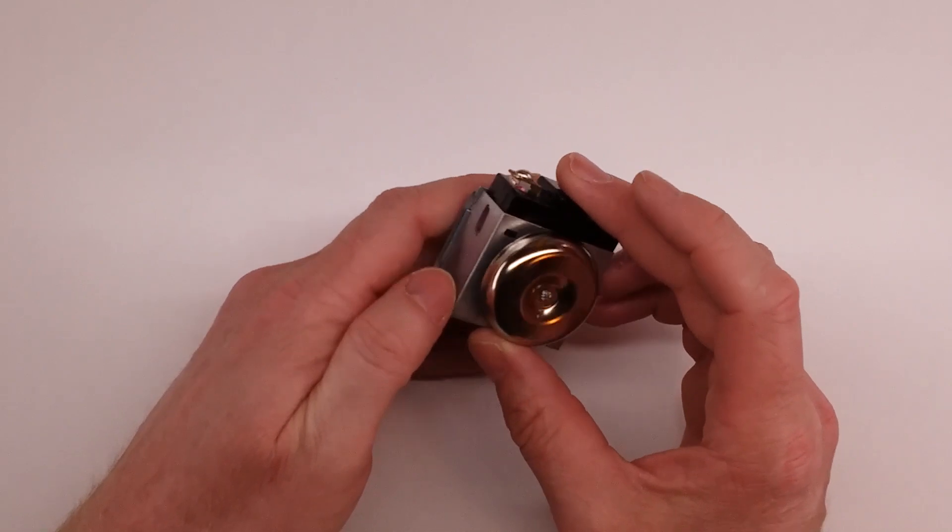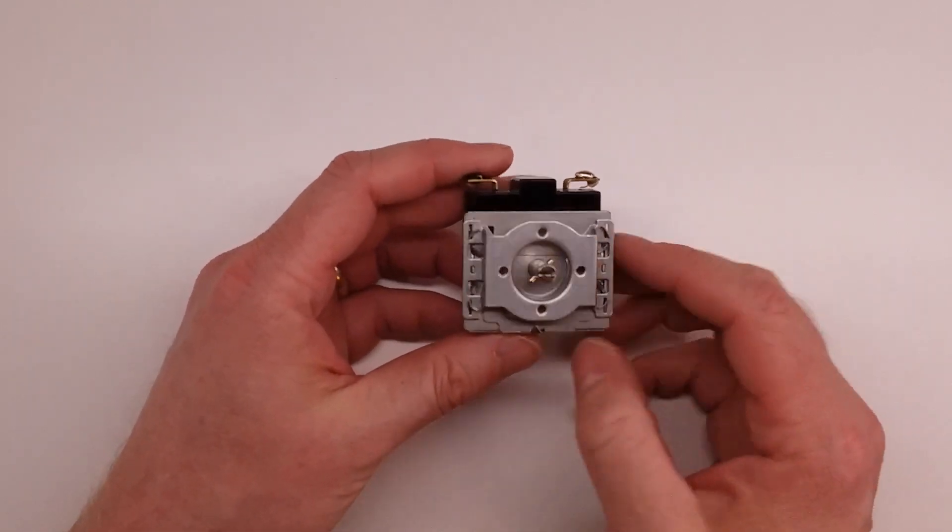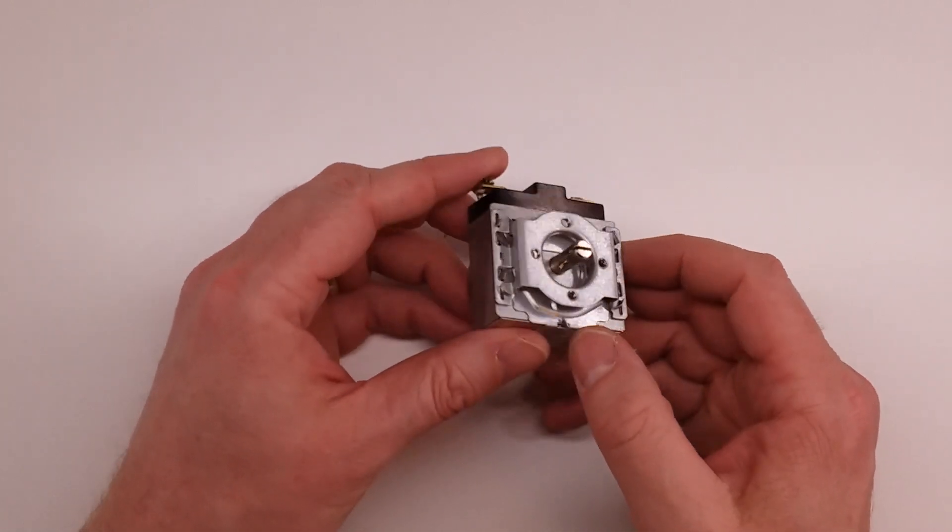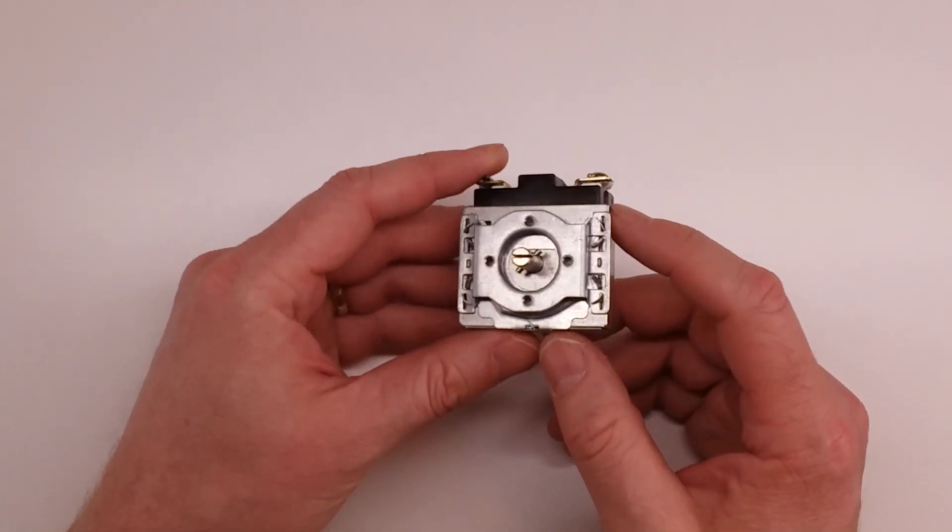Let's go ahead and take it apart. The best I can tell, the only things holding it together are these little bent clips here, these little arms that are bent over. So let's grab some needle nose pliers and bend them straight.